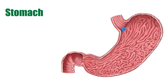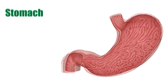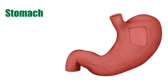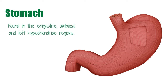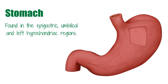Here we can see the stomach connecting to the esophagus and duodenum. We can also see its internal surface and the folds which are called rugae. The stomach is a muscular bag that expands to accommodate ingested food. The stomach connects the esophagus and the small intestine. It's found in the epigastric, umbilical, and left hypochondriac regions of the abdomen.